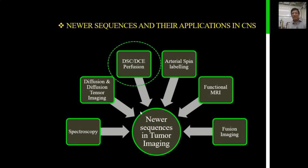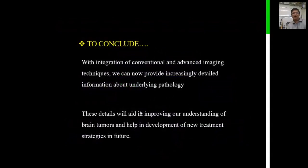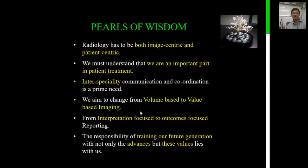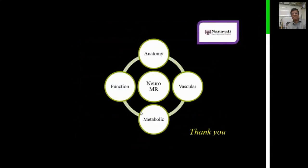Perfusion, arterial spin labeling, functional MRI, and fusion imaging will be covered in the next talk. To conclude this part, with integration of conventional and advanced imaging techniques, we can provide increasingly detailed information about the underlying pathology. These details will aid in improving our understanding of brain tumors and help develop new treatment strategies. Radiology must be both image-centric and patient-centric, with interspecialty communication and coordination being most important. We must aim to change from volume-based to value-based imaging and from interpretation-focused to outcome-focused reporting.